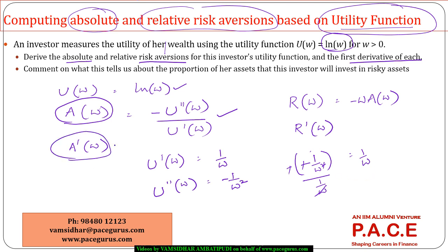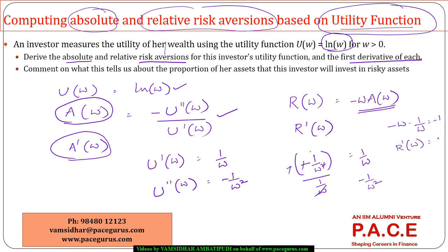Going ahead, A dash of w is minus 1 by w squared. Similarly, I now compute R of w, which is minus w times A of w. Since A of w is 1 by w, this gives R of w equals 1 — a constant. Therefore, R dash of w, the derivative of this constant, is 0.